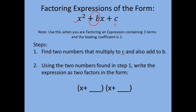Once you've found those two numbers, you're going to use them to write the expression as two factors in the form x plus the first number, times x plus the other number found in step one. This will give you the factored form of that trinomial.